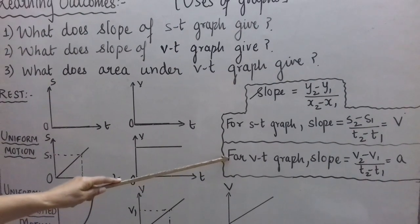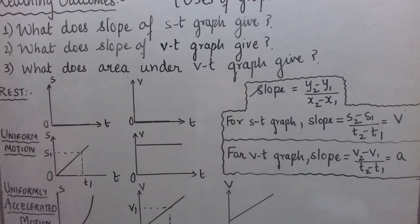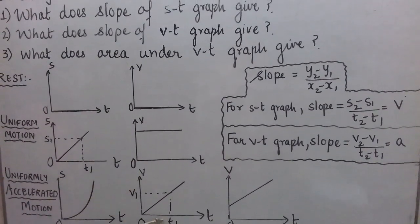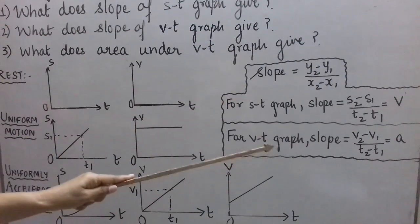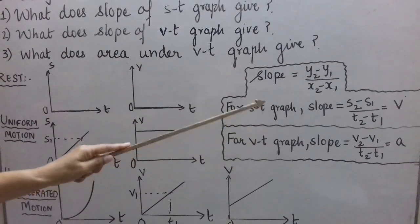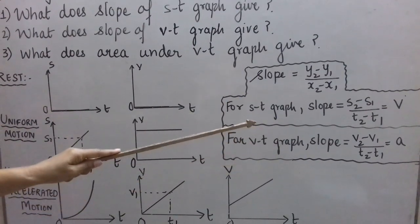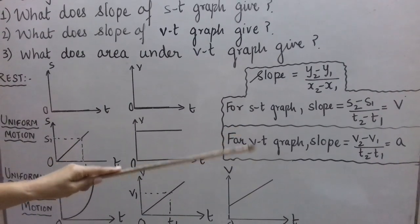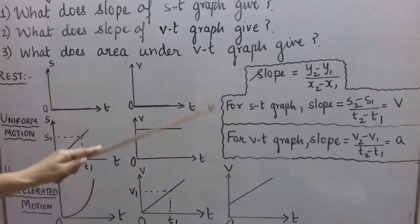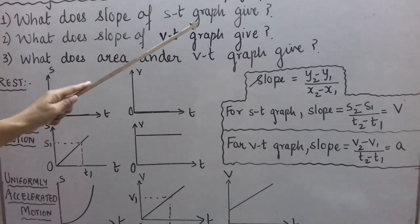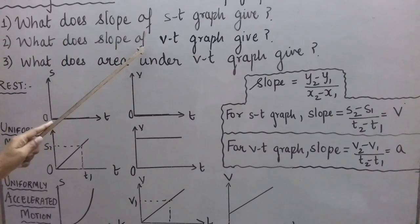For a VT graph, slope = (V2 − V1) / (T2 − T1). V2 − V1 is the change in velocity in time interval T2 − T1, so change in velocity divided by time is change in velocity per unit time — that is acceleration. Therefore, the slope of an ST graph gives speed or magnitude of velocity, and the slope of a VT graph gives magnitude of acceleration.